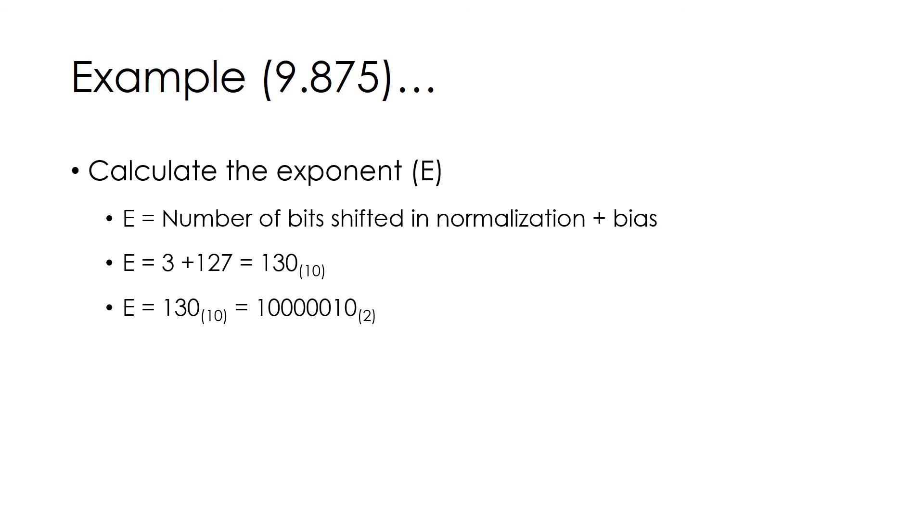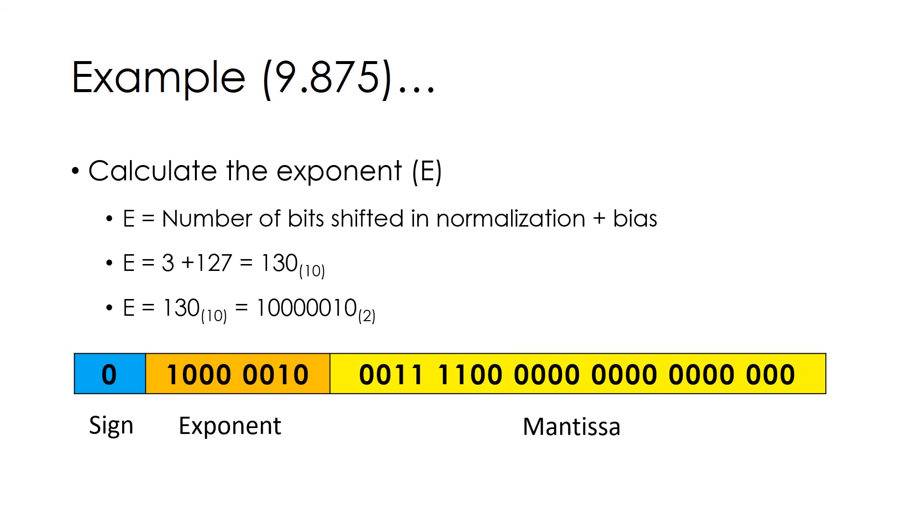Now write down sign, exponent and mantissa collectively as shown. And finally, decimal 9.875 in IEEE 754 format equals 01000010001110000000000000000000.